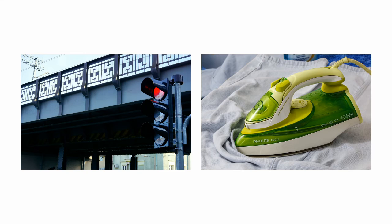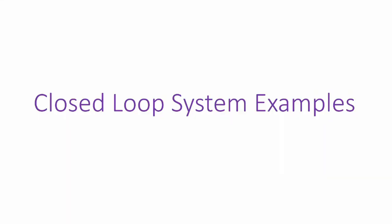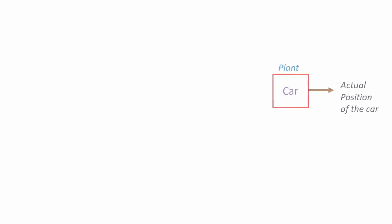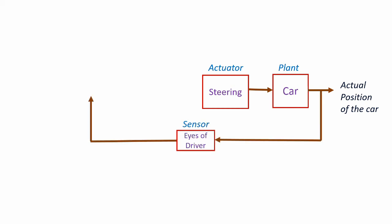Now let's consider some examples of a closed loop system. We can see that the driver is actively trying to control the position of the car. This is done with the help of the steering mechanism in the car, and he is actively monitoring the position of the car while driving through his eyes. This is an example of a closed loop system. The plant in this system is the car, the variable to be controlled is the position of the car, and this is controlled through the steering mechanism based on the feedback the driver gets from his eyes.